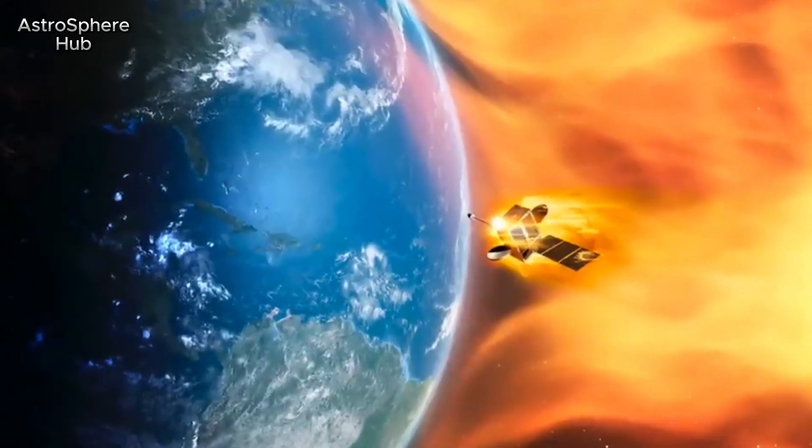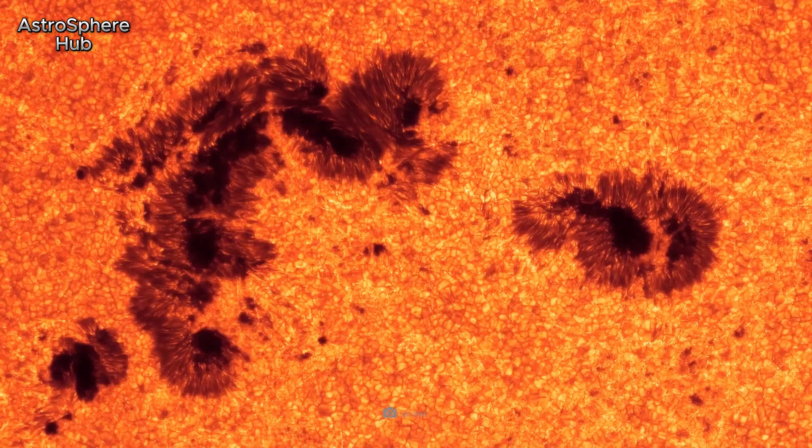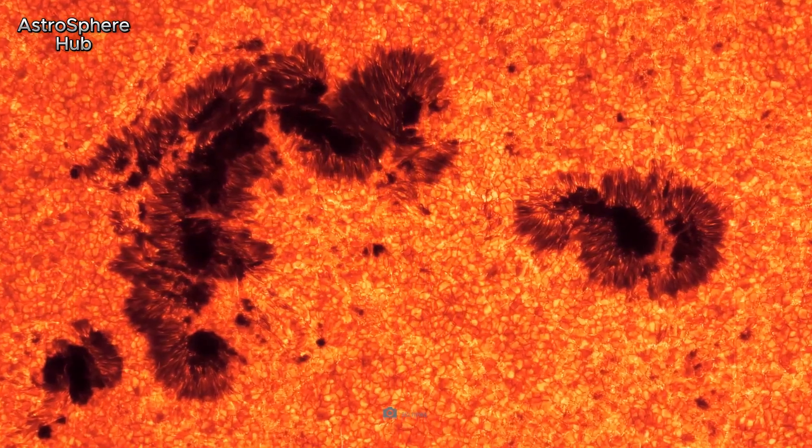Solar storms are cyclical events, and the sun has storm seasons similar to certain geographical regions of the Earth.